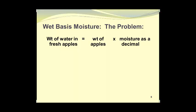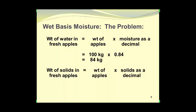To find the weight of the water in the fresh apples, we take the weight of the apples and multiply by the moisture content expressed as a decimal fraction. This gives us 100 kilograms times 0.84, which equals 84 kilograms of water in the fresh apples. The weight of the solids will be 100 kilograms times 0.16, giving us 16 kilograms of solids in the fresh apples.